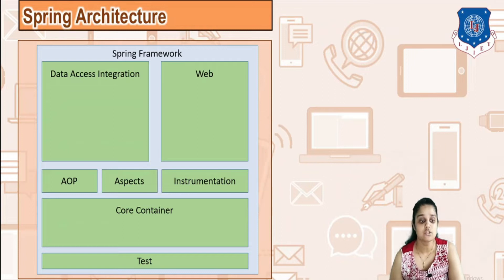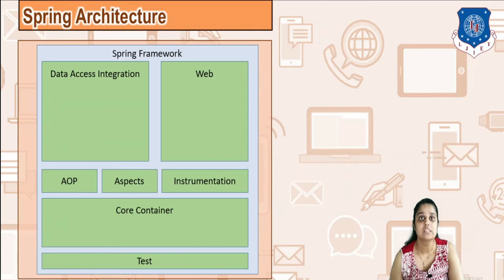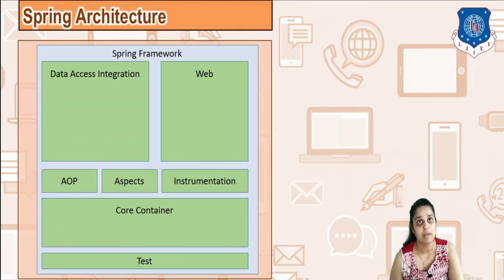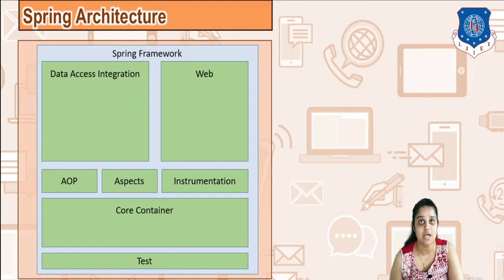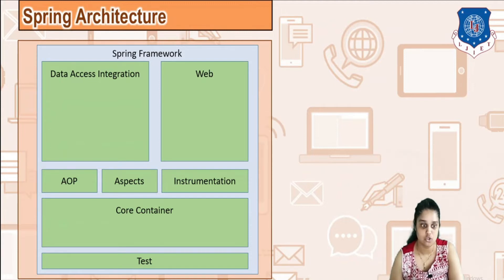Data Access Integration deals with database connectivity, mapping POJO files to tables, mapping XML files and objects, doing transactions, and Java Message Services. It consists of JDBC, which helps you write your SQL or database connectivity code without worrying about errors.